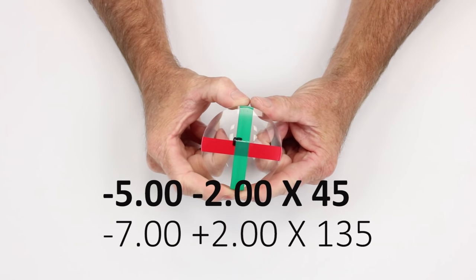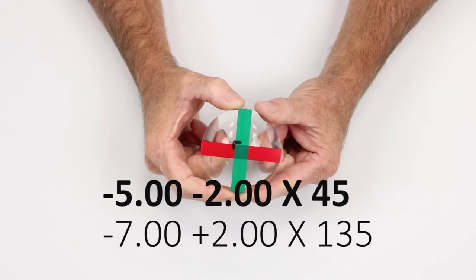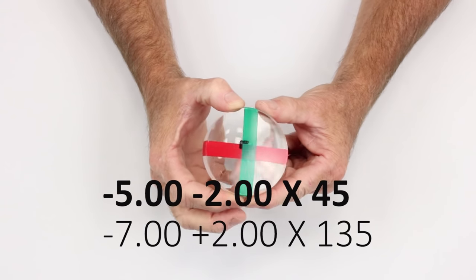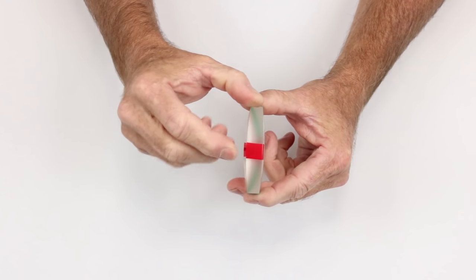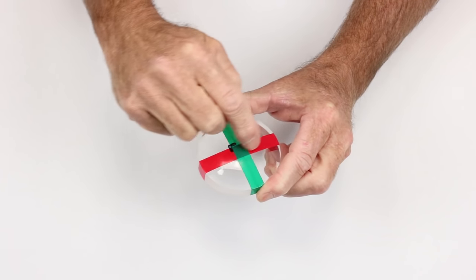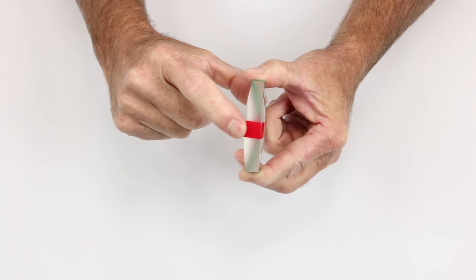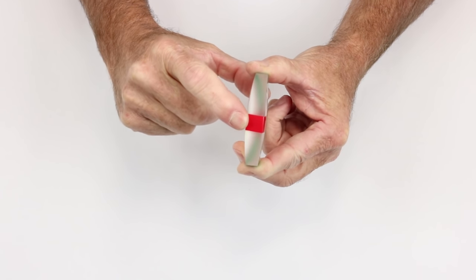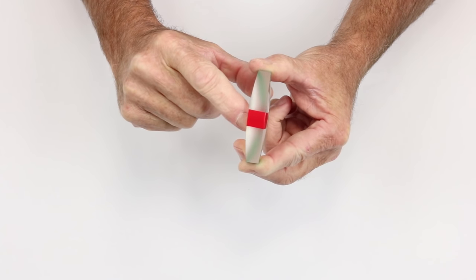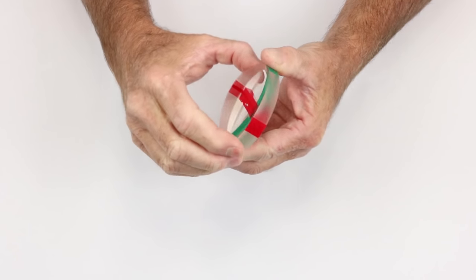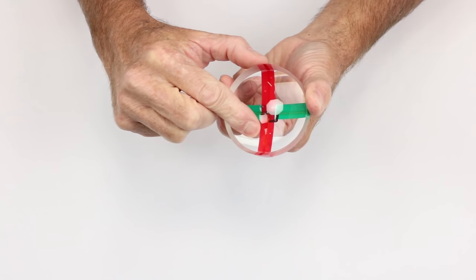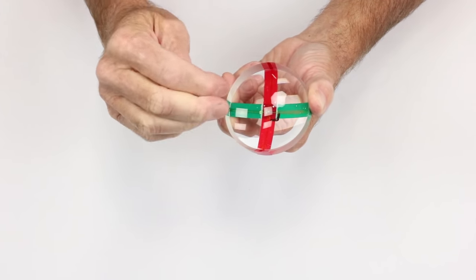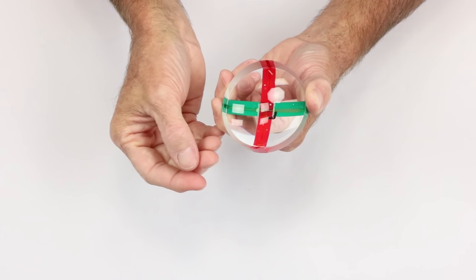If I do flat transposition, I would have a minus seven, plus two at 135. If I take this lens and I look at my red band, in this case, my red band would represent my minus seven. It would be the most powerful point on the lens anywhere. It would have my thickest edge. It would have my steepest curve.